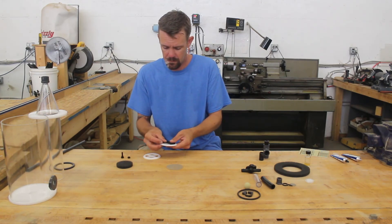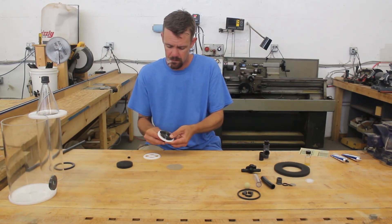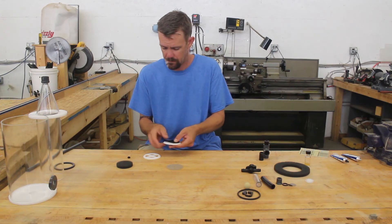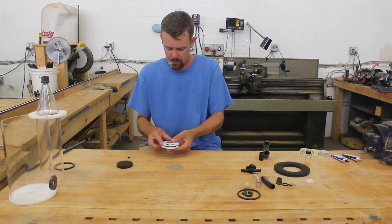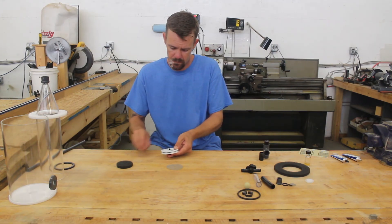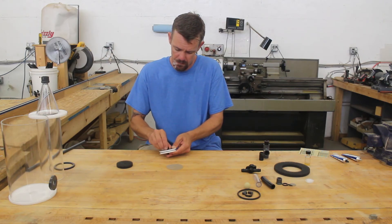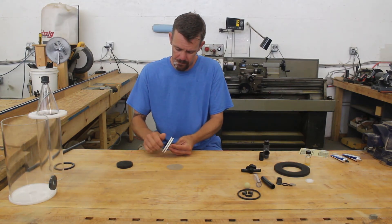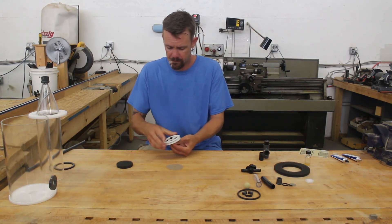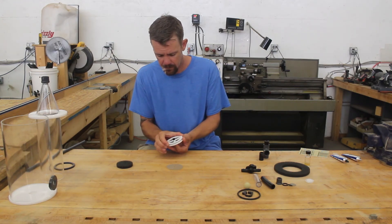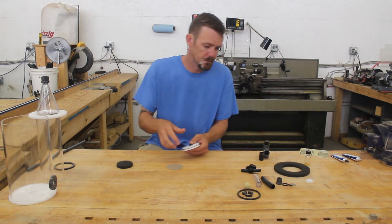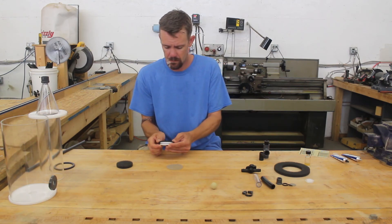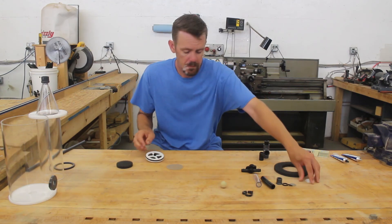Now we can assemble the top screen. Insert the thumb screw through one plate, and then whichever screen you plan to use, the second plate over that, and then thread on the nut. Slip on the o-ring and then lightly grease it.